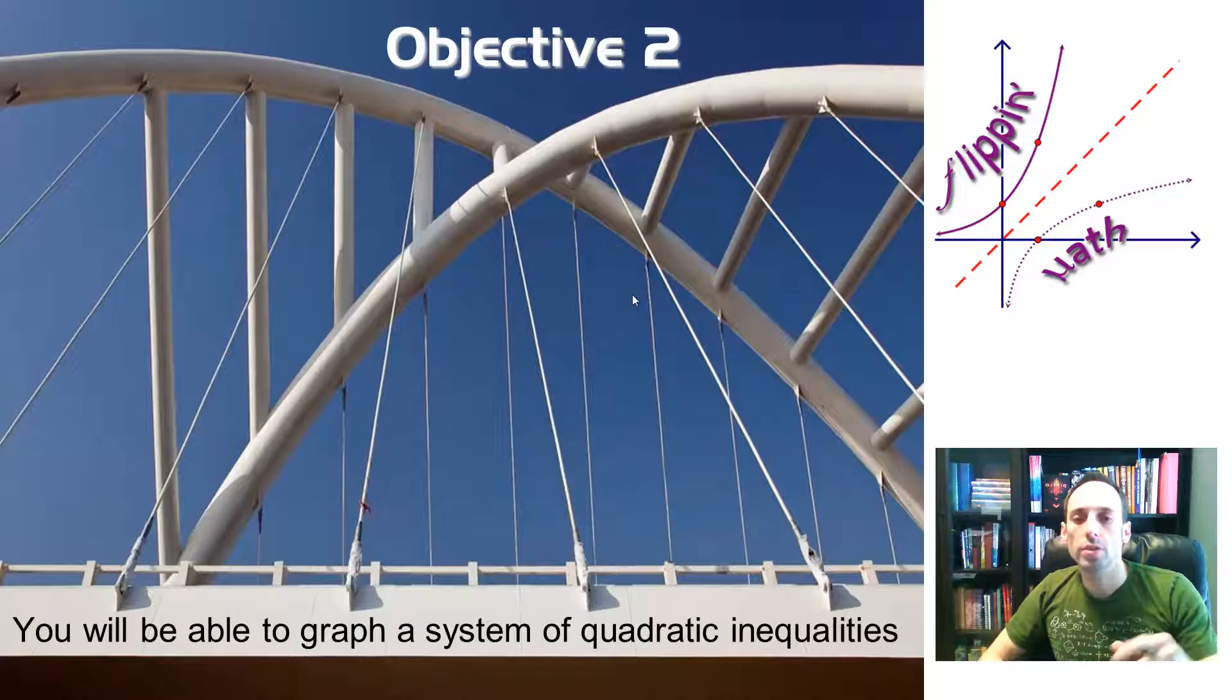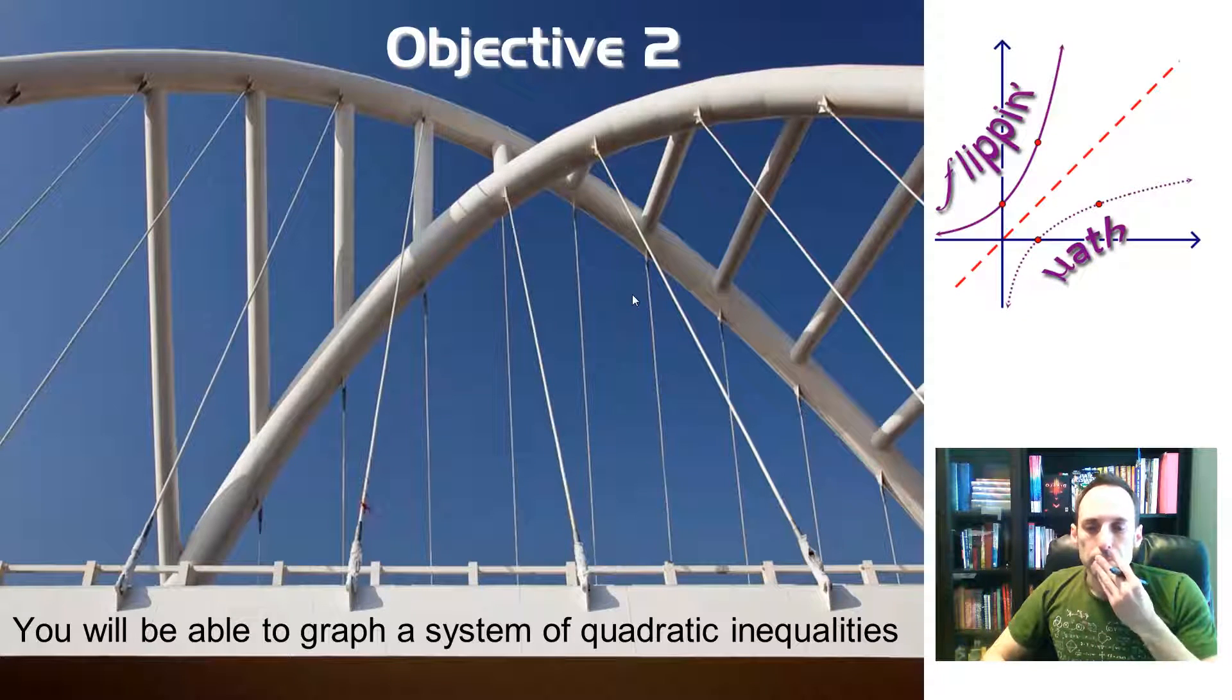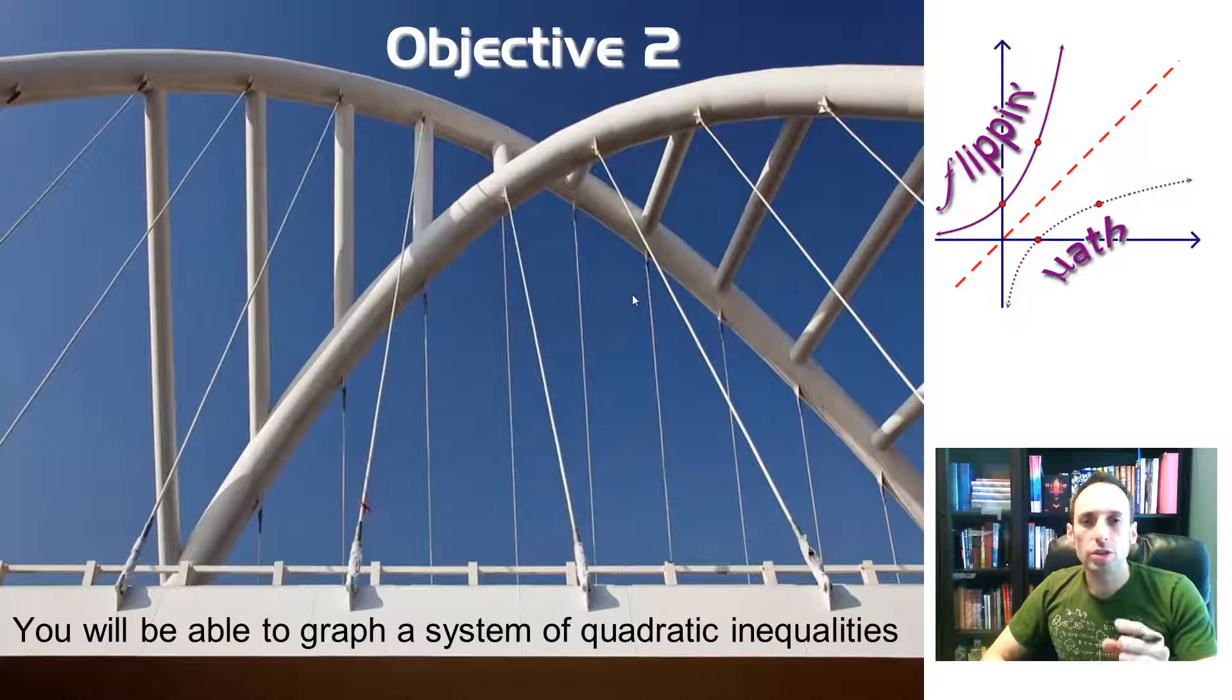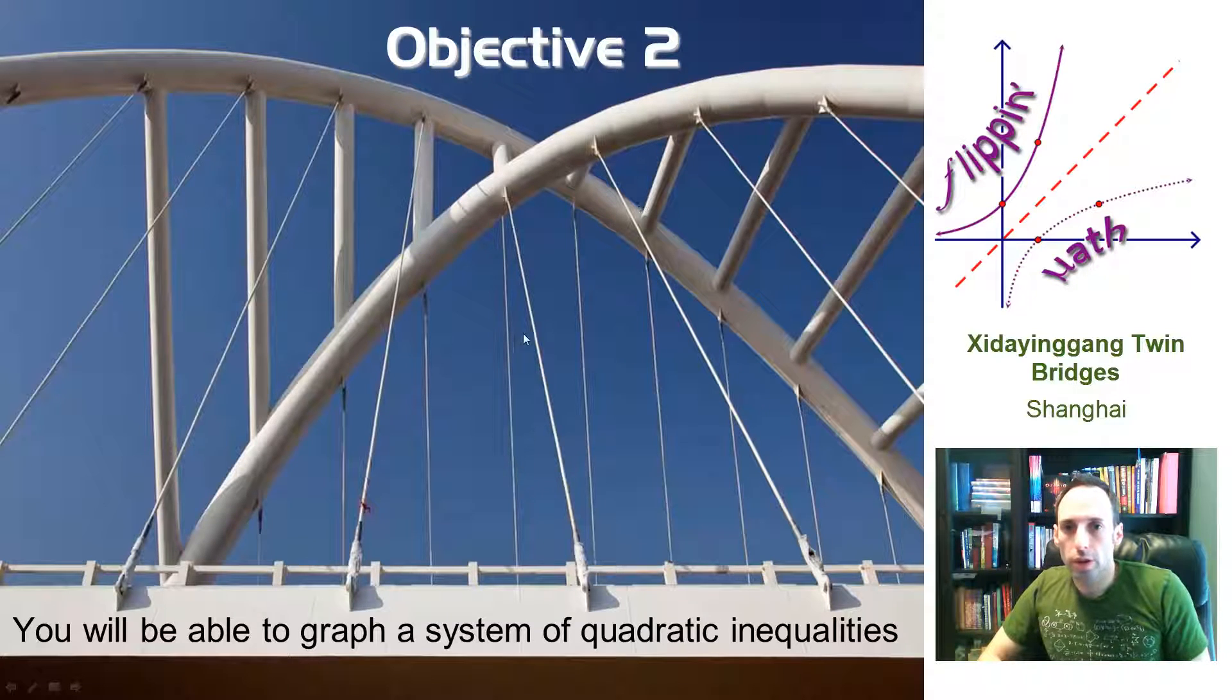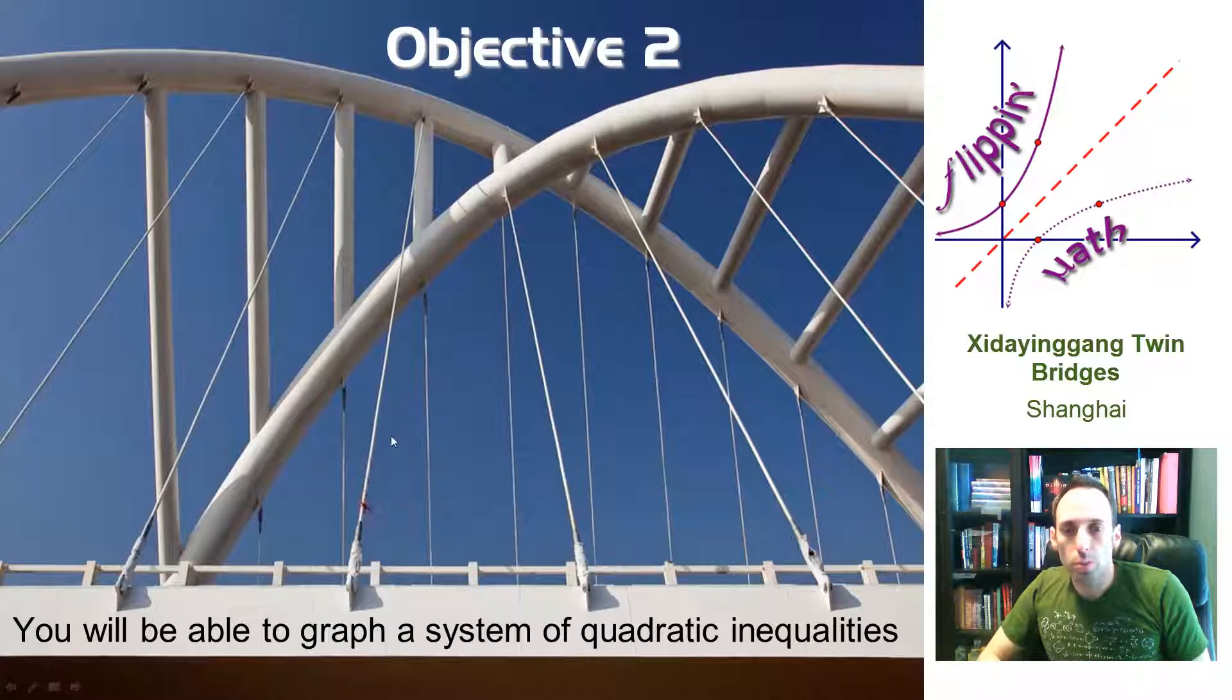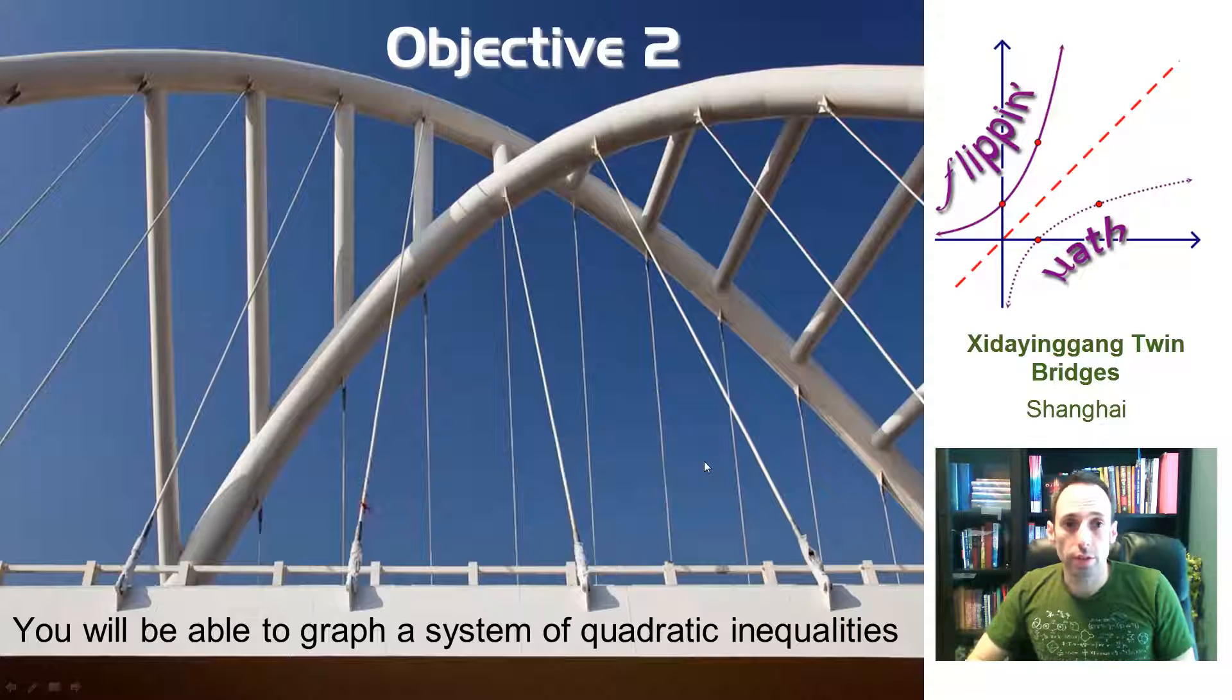We're doing the same thing here except with parabolas. In the picture, this is a bridge in Shanghai, and you can see we've got one parabola going one direction with shading underneath, and a parabola going another direction with shading underneath. The actual answer, the overlap, is where they would both be shaded together.